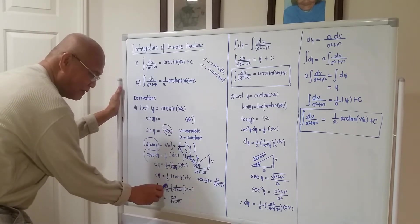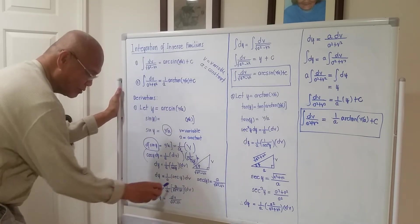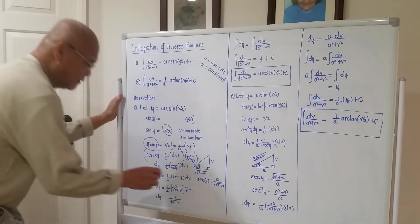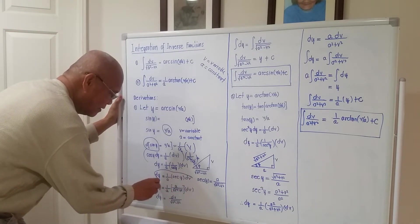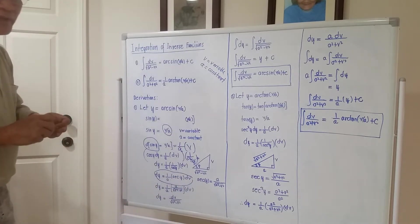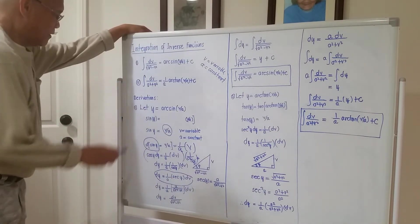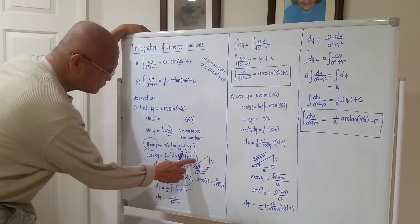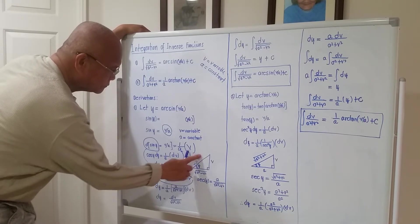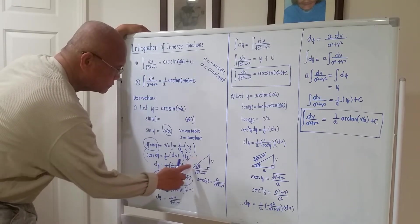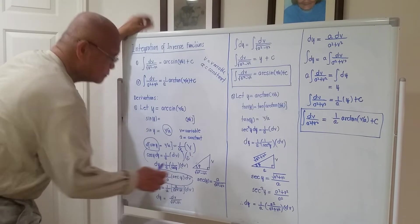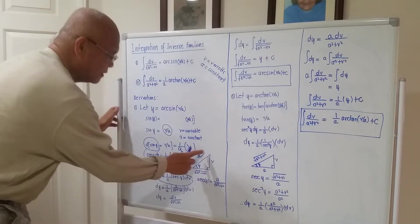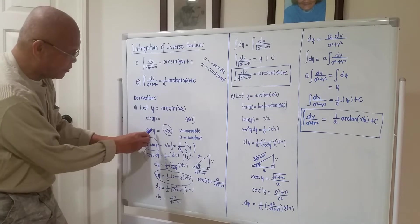So dy equals one over a times secant of y times db. That is the resulting equation. Now we use the right-triangle method. Here sine of y is b over a, so we can construct a right triangle. From the definition sine of y equals b over a, this is opposite over hypotenuse.